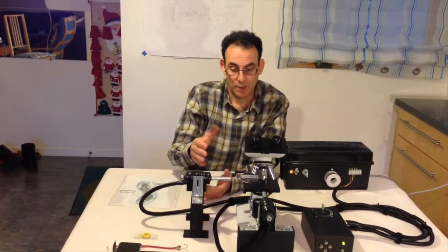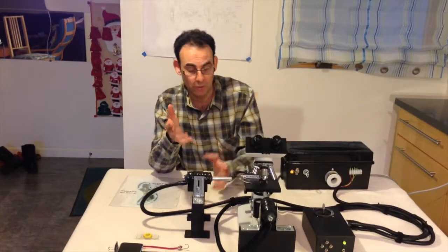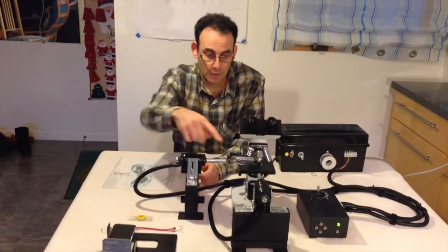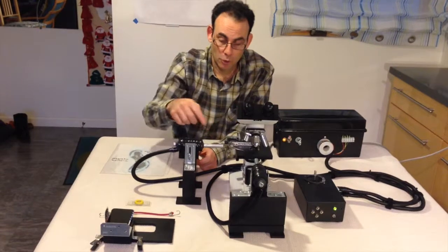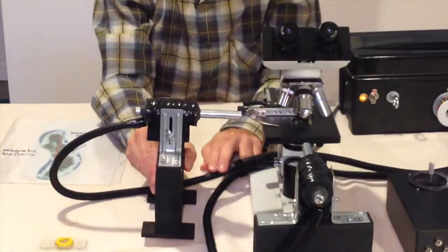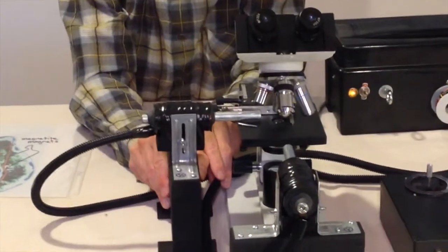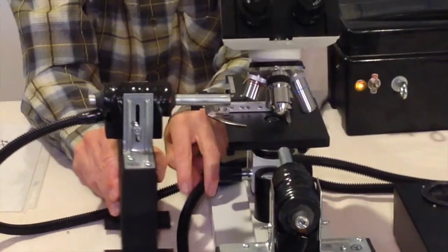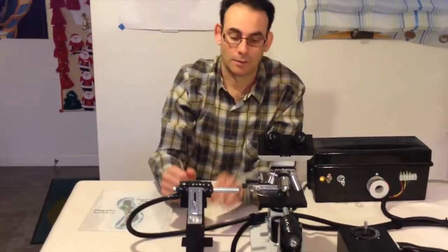Our two electromagnets produce our magnetic field components in the x and y directions. The way we've shown it here, they're pulled back so that you can see them. When we actually use them, these soft iron cores are designed so that they can come in and get right up next to the sample that contains the bacteria.